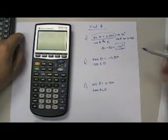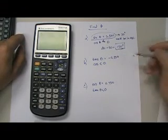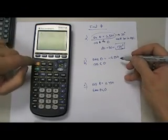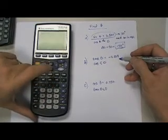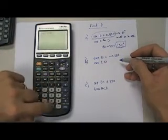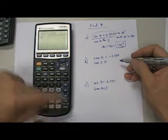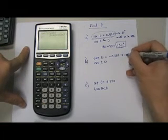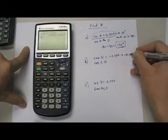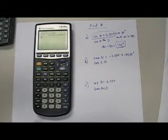Second one, tangent of theta equals negative 0.250. So the first thing I do is take the arc tangent of negative 0.250. And I get negative 14.04 degrees. Now, obviously, that would be easy to just write that down.